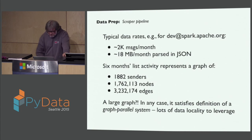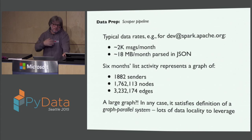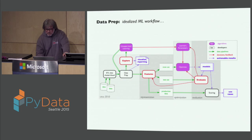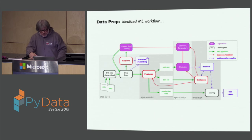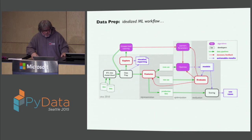That's interesting — it does satisfy graph parallel systems, so there's lots of data locality to leverage. You can do this in parallel, whether on your multi-core laptop or on a cluster. Now, I've shown before an idealized machine learning workflow, and I use this as a template to think about applications when I'm building them. Typically there are multiple data sources, there's a lot of work to clean up the data, some type of ETL.